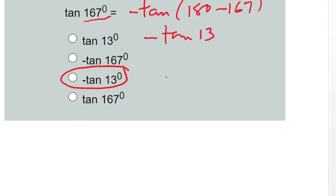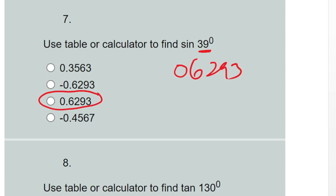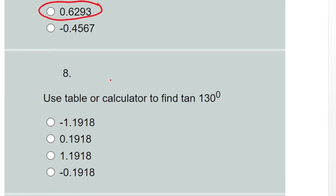Question seven: use a table or calculator to find sin 39 degrees. 39 degrees is in the first quadrant, so the answer is positive. Using the calculator, sin 39° gives us 0.6293. That is the correct option.